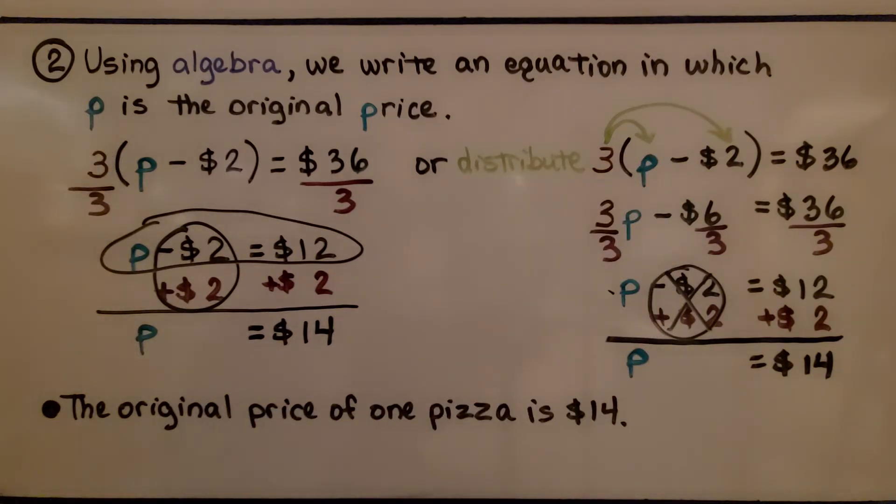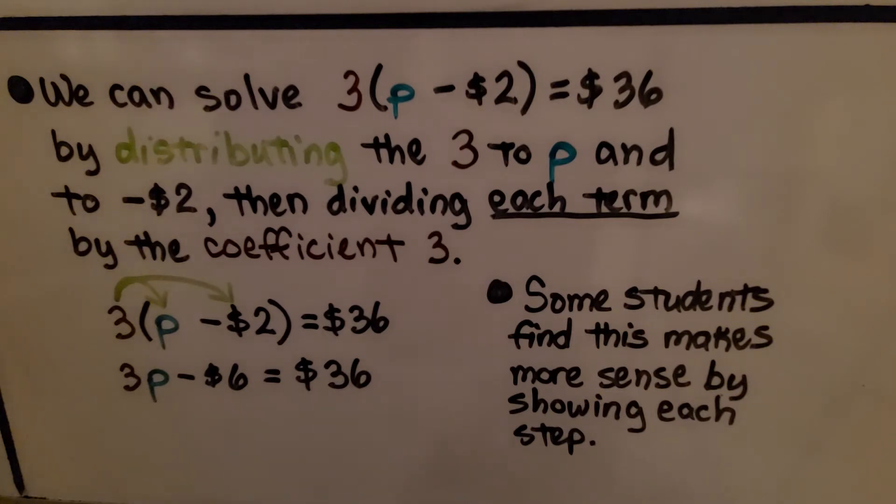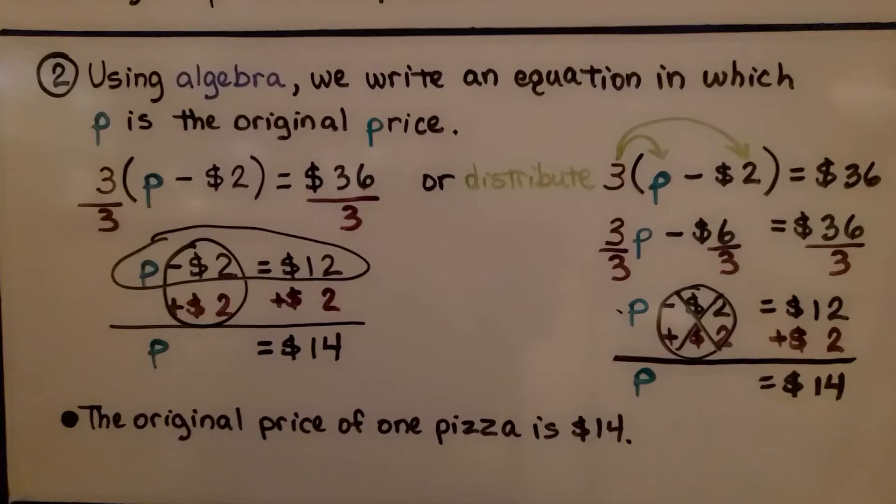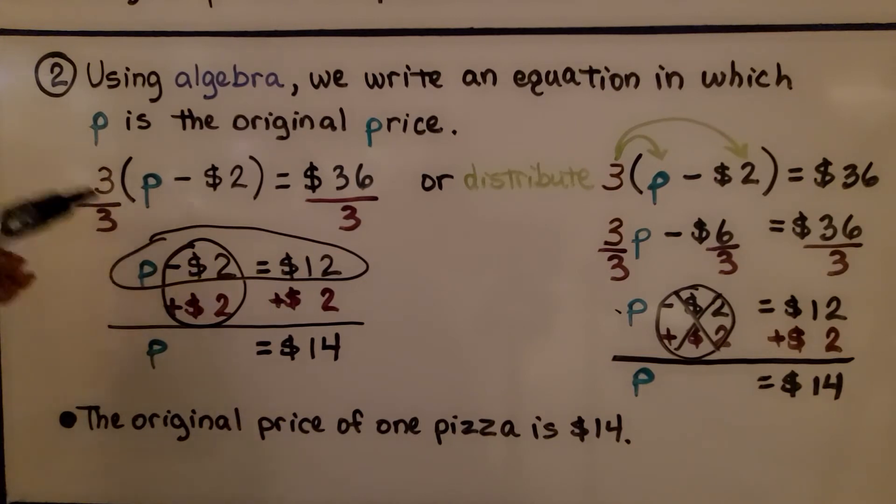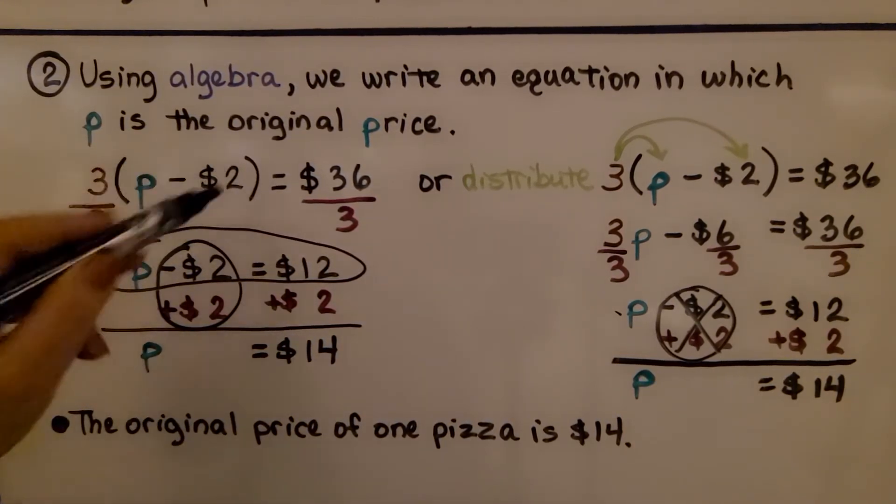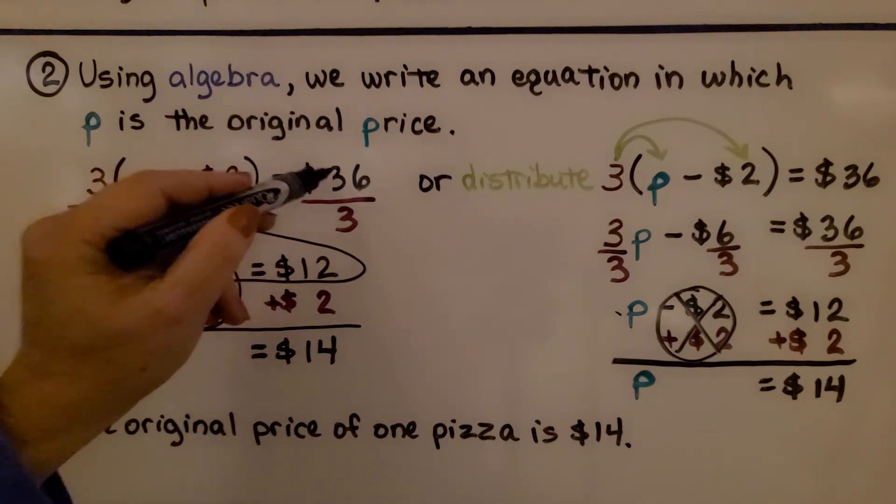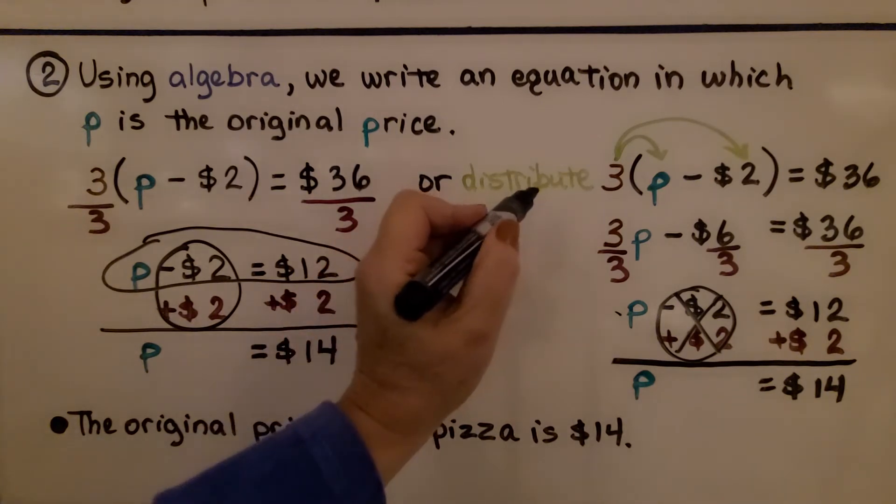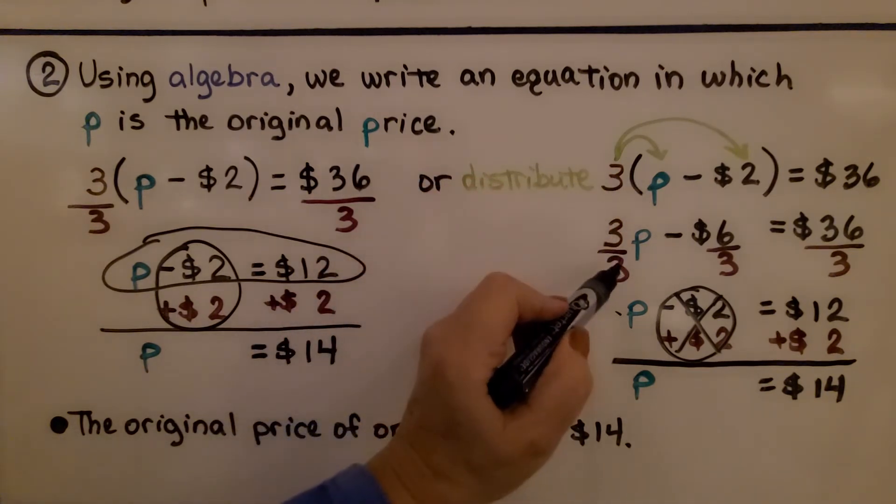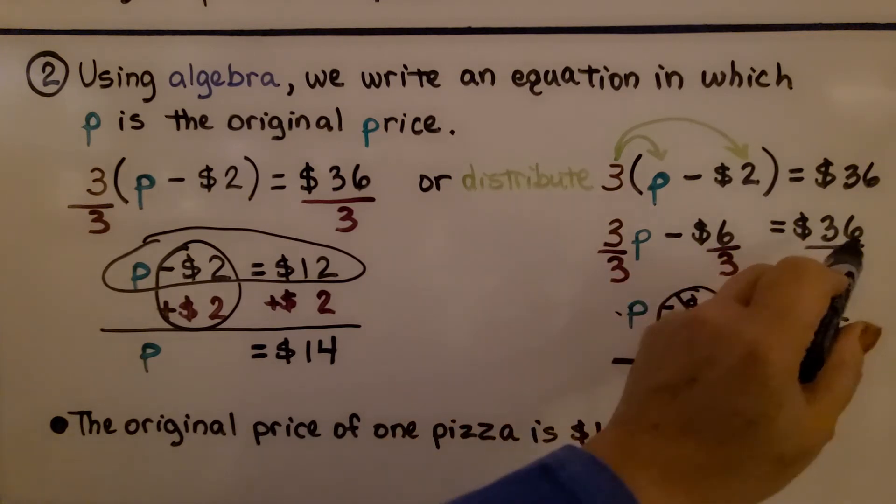This way is quicker. Now, some students, some of you, may find that using the distributing method to make more sense by showing each step. Some of you may be able to just divide this 3 and that 36 by this 3 and do it quicker. Just remember, if you do it this way, we do not divide within this parentheses. We're just going to divide this number here, outside the parentheses, and this number after the equal sign. If we do it the distributing way, then we are going to have to divide by each term of the equation.